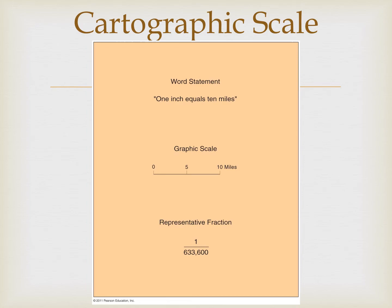Probably the most challenging of these three is the representative fraction. When we talk about RF scale, the number in the numerator is the same unit of measurement as the number in the denominator. So in the example on the screen, one unit on the map equals 633,600 of the same unit on the earth's surface. One inch on the map equals 633,600 inches on the earth; one meter on the map equals 633,600 meters on the earth. But you can't change units. You can change units with word statements like saying one inch equals 10 miles, but not with representative fractions.